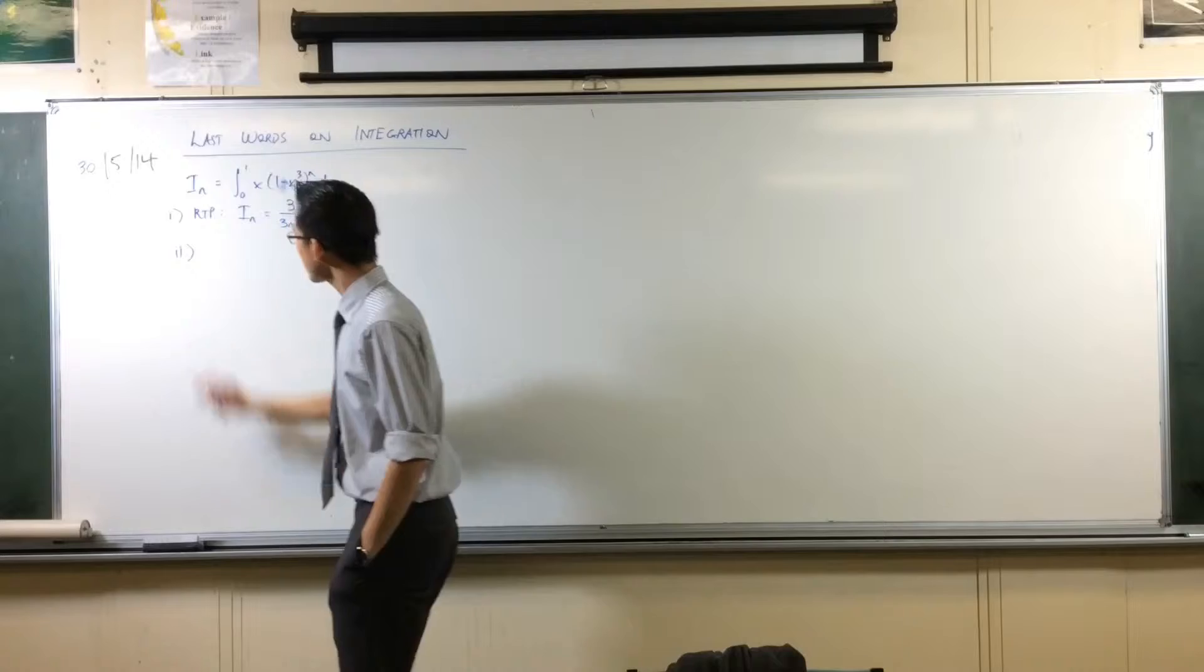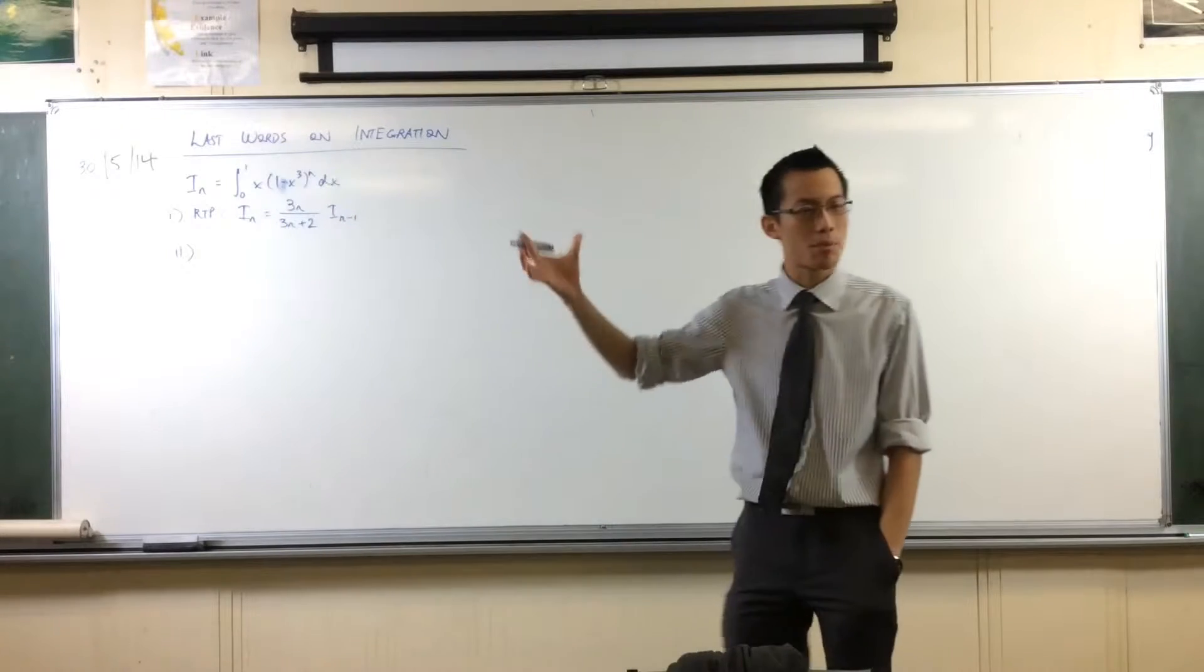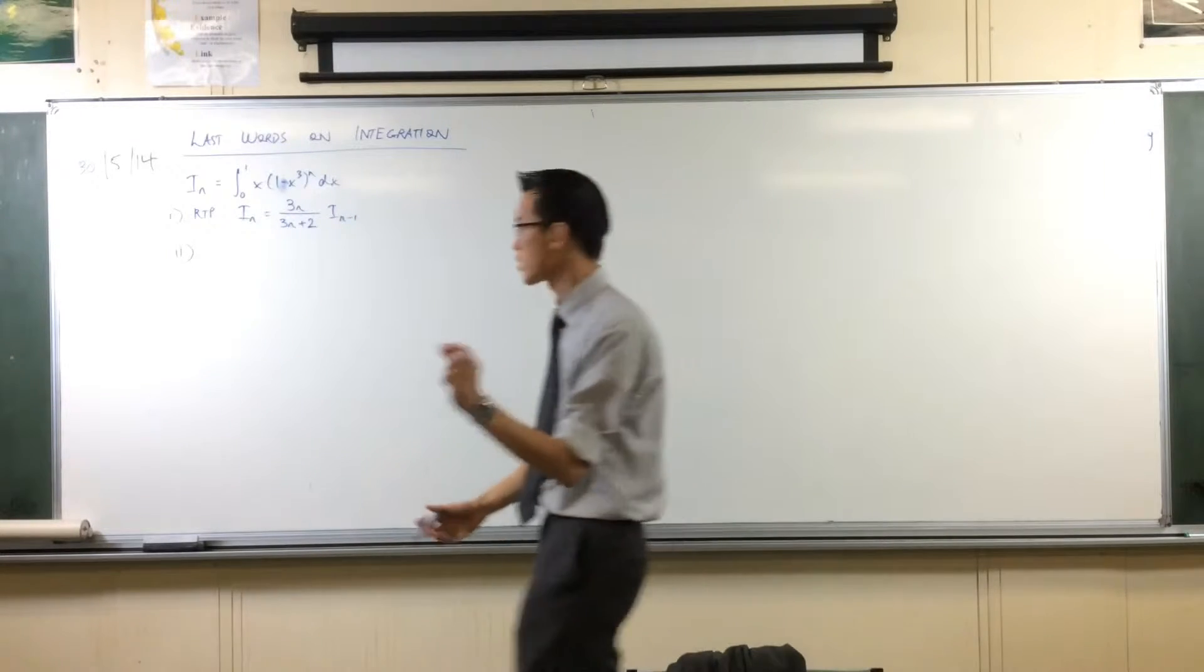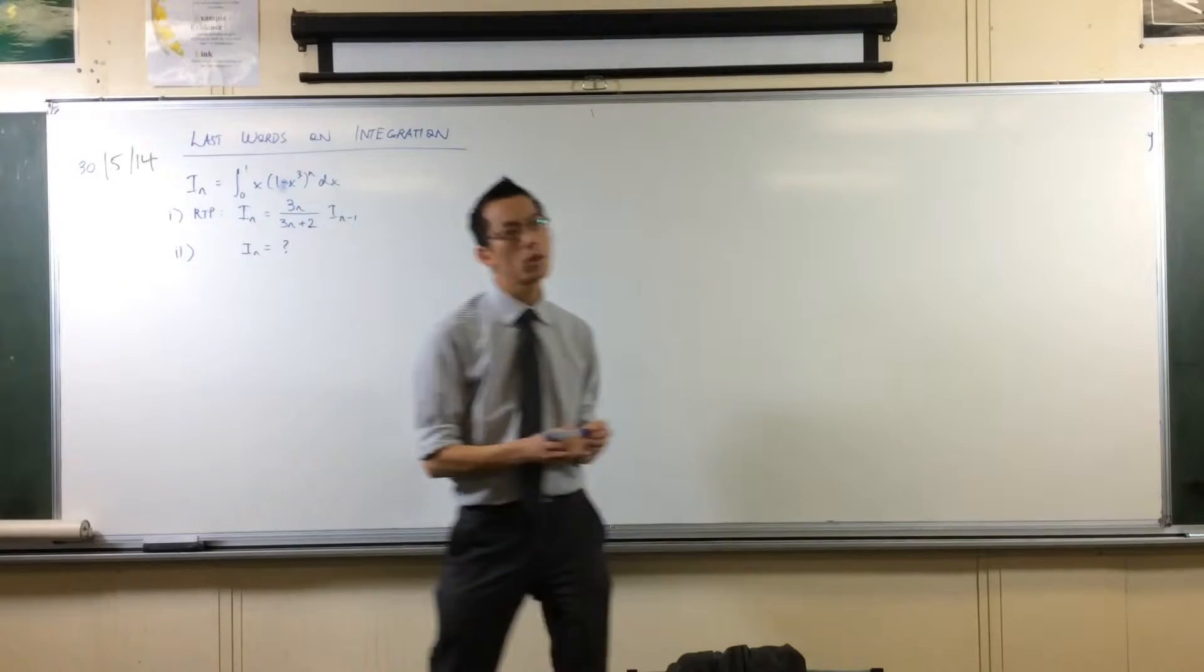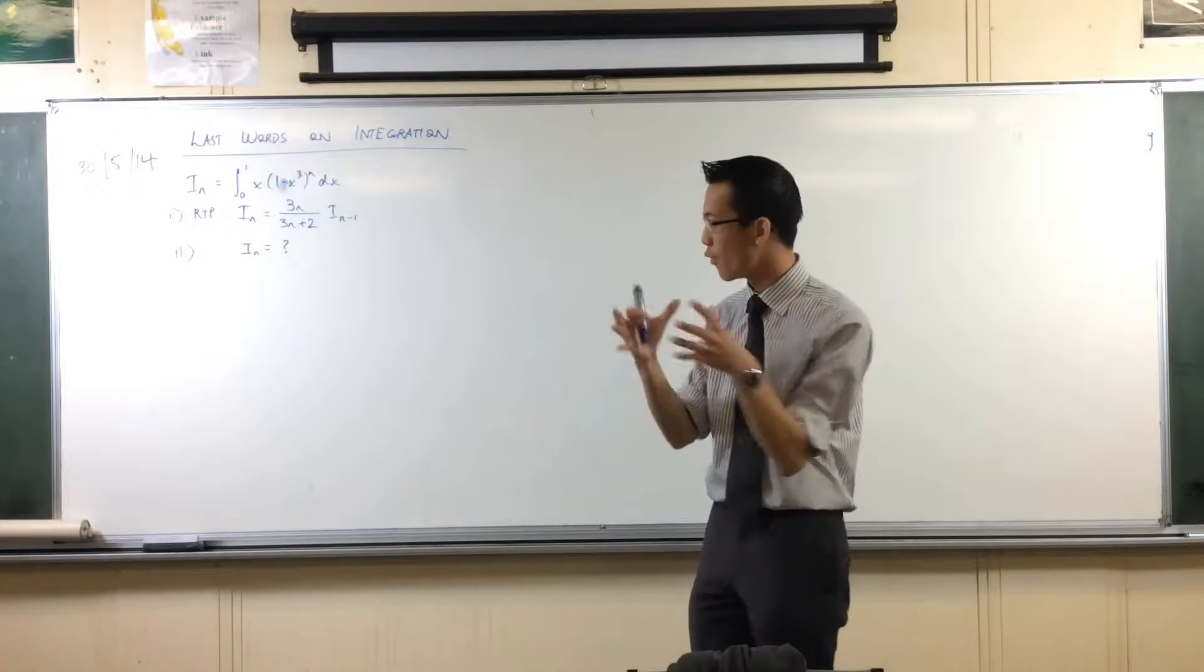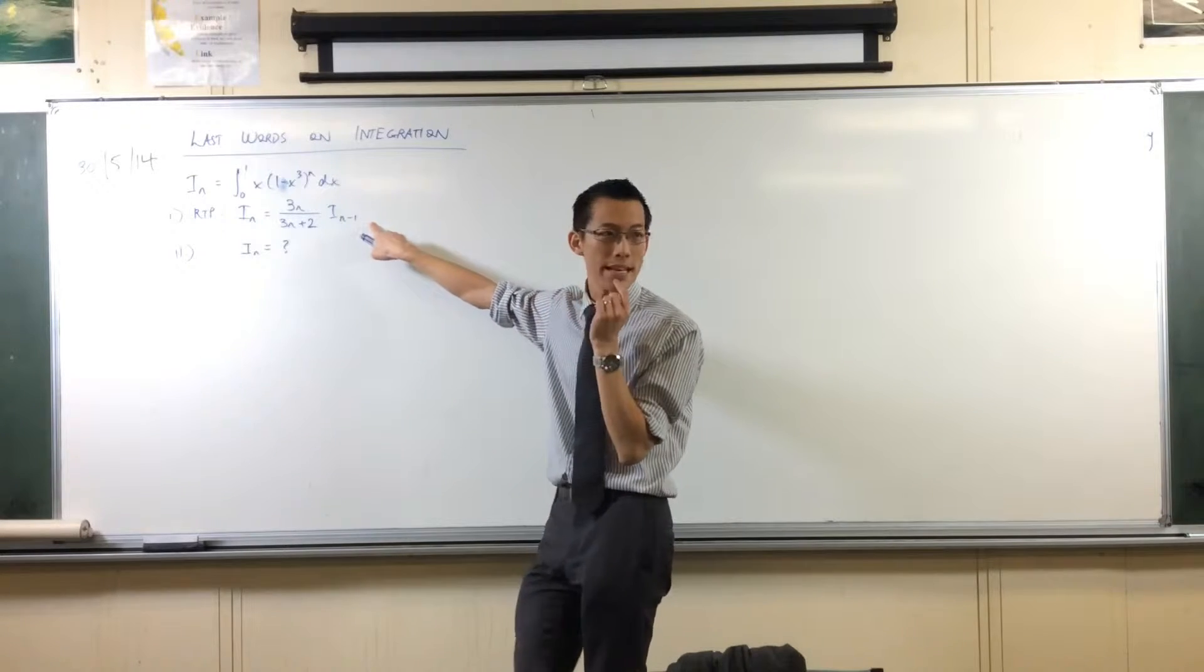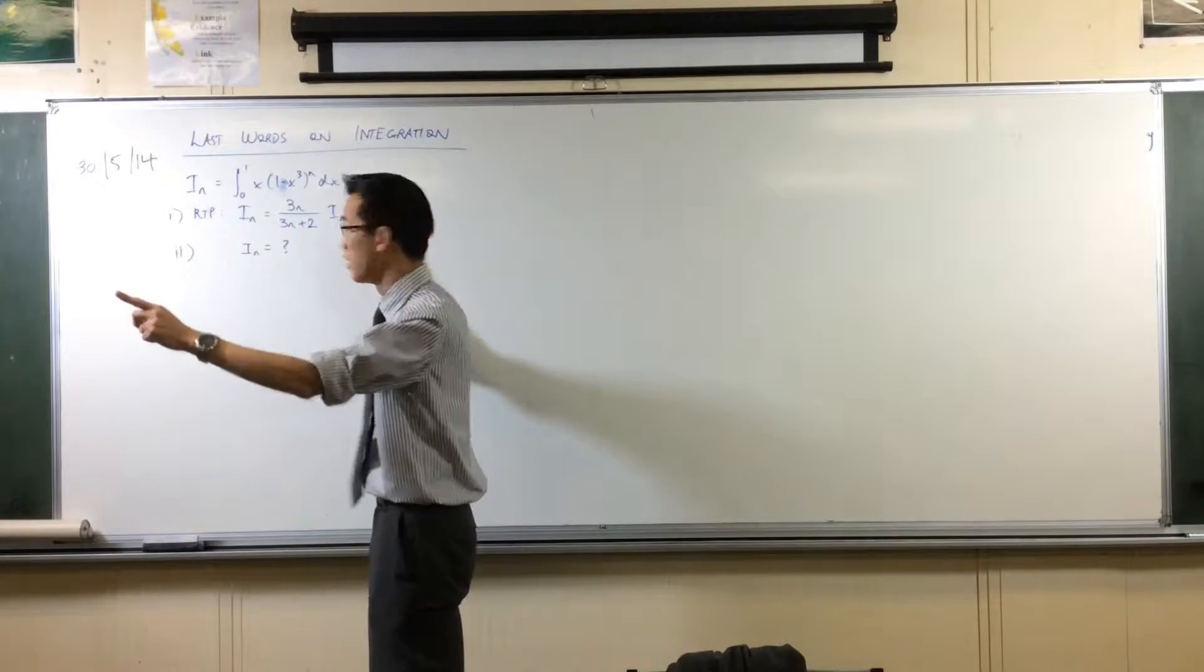Part two, so it was not that they wanted you to prove something, but they wanted you to find another expression for I_n. Importantly, they wanted it to account for n equals zero.